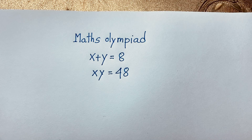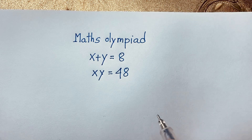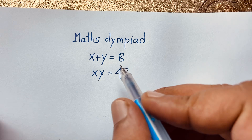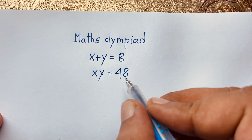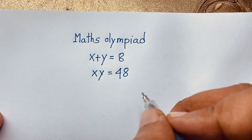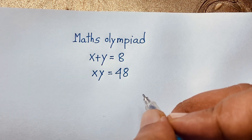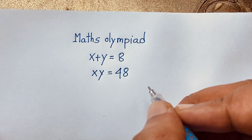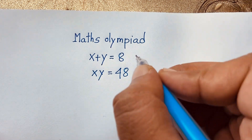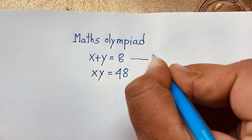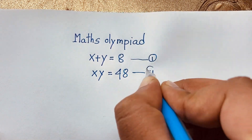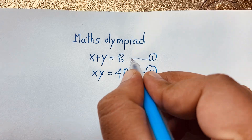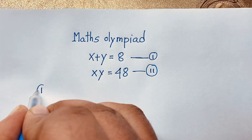In this video we have solved a nice math problem. The question is: x plus y is equal to 8, and x times y is equal to 48. We'll find out what is the value of x and y. We have two equations — this is our first equation and this is our second equation.